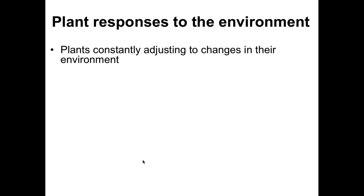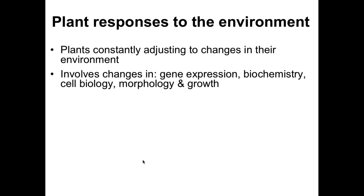Plants are continually changing to conditions. In the morning when it's cooler, their metabolism might be different than in the afternoon — they're continually adjusting to optimize their growth and survival for the environment at that moment. This change involves changes in gene expression, changes in the metabolites they're accumulating, and changes in cell biology, morphology, and growth. Plants will also alter their shape, size, and the direction of their growth to continually adjust to their environment.